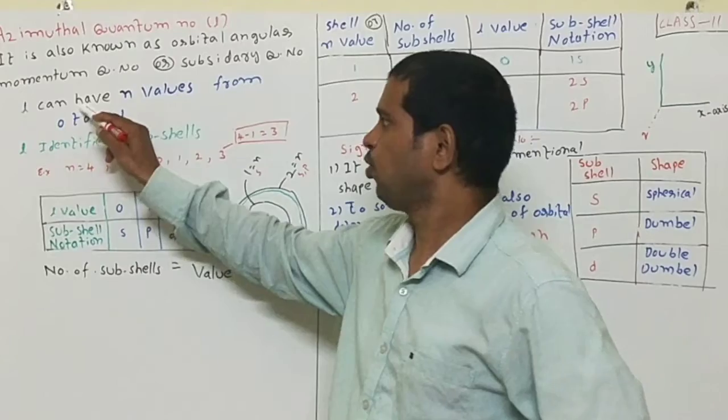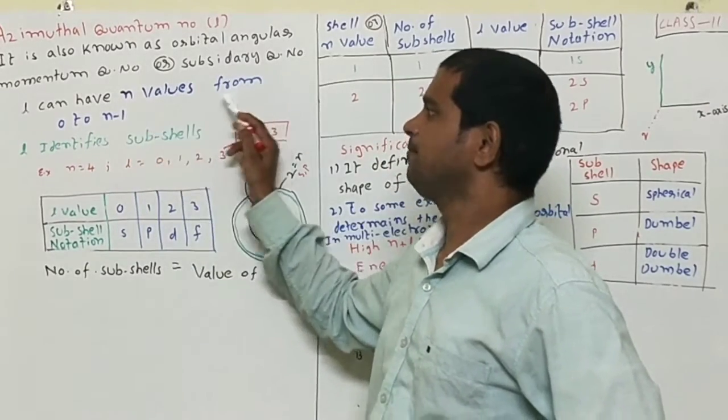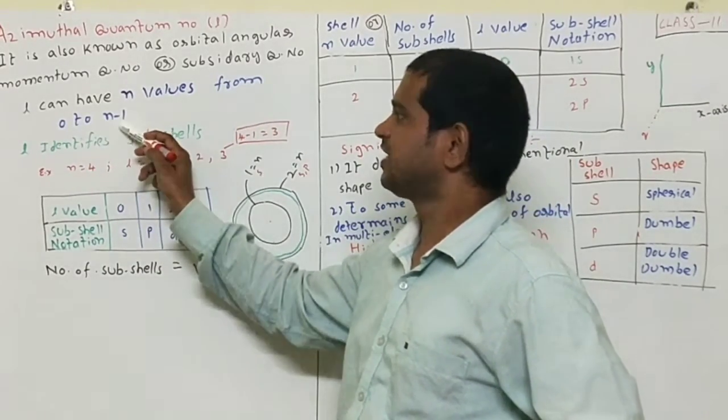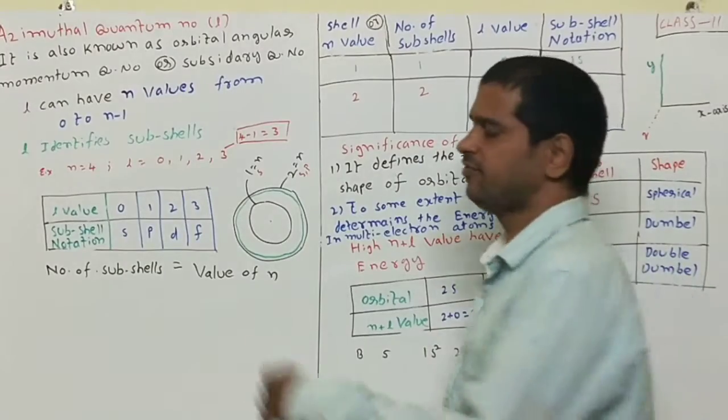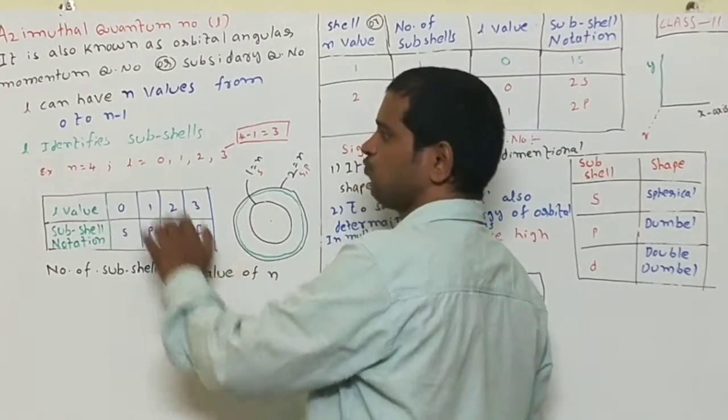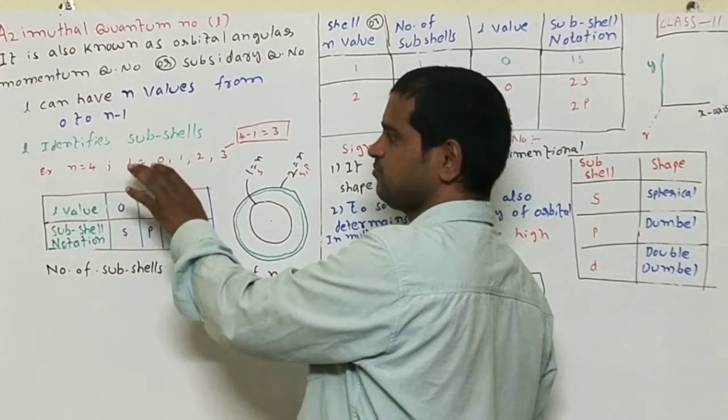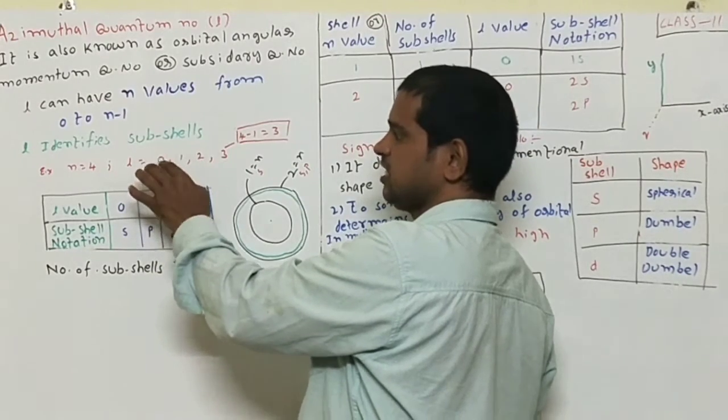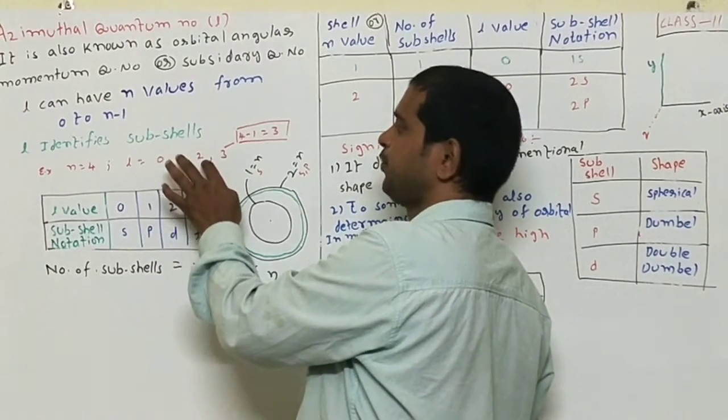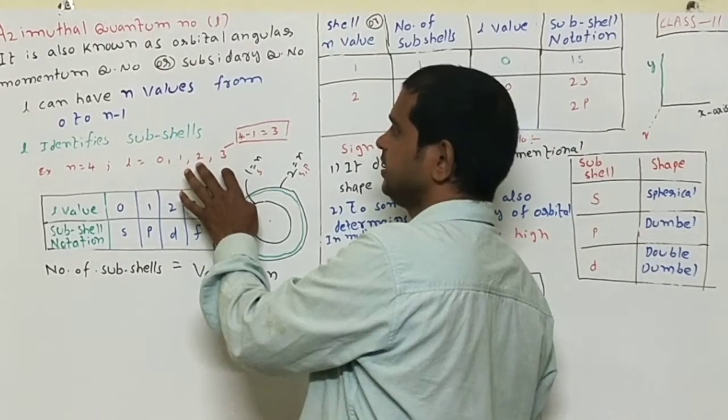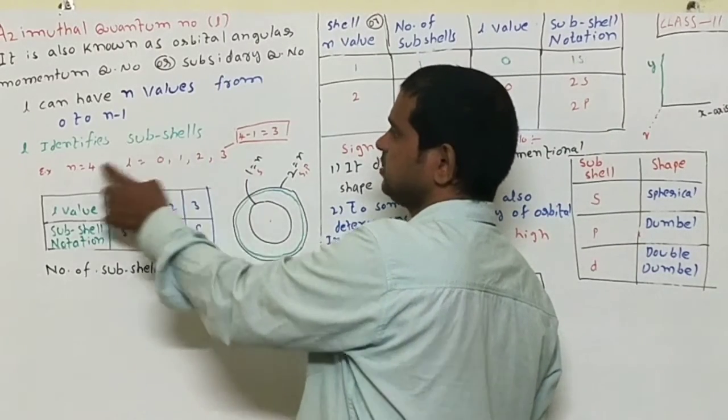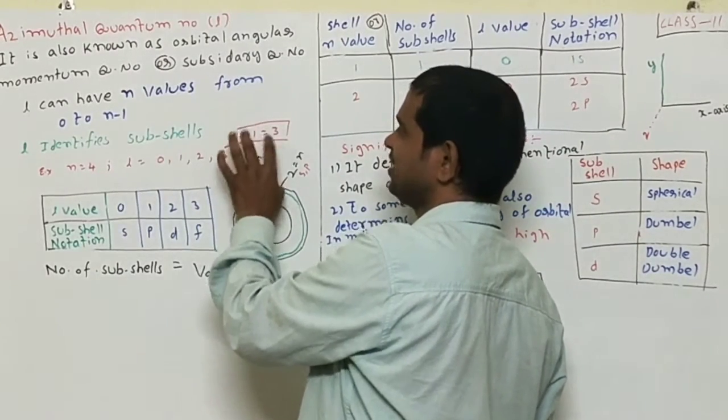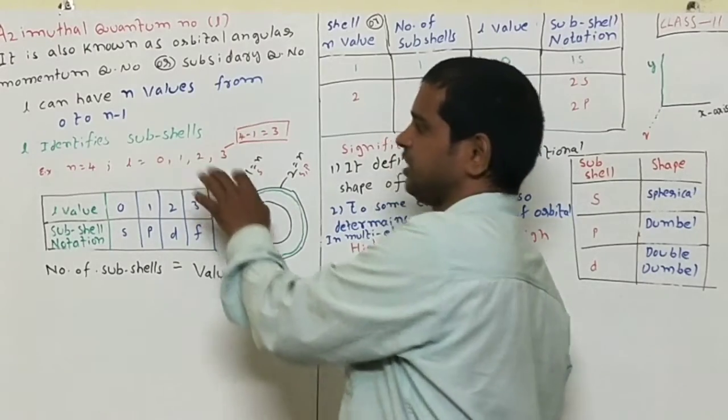L can have n values from 0 to n minus 1. For example, if n equals 4, L has 4 values starting from 0, and those values are 0, 1, 2, 3. See here, n minus 1, that is 4 minus 1 equals 3. The last value is 3.